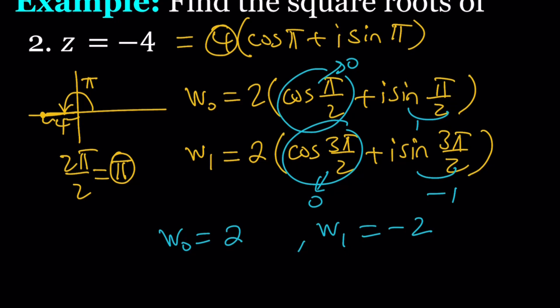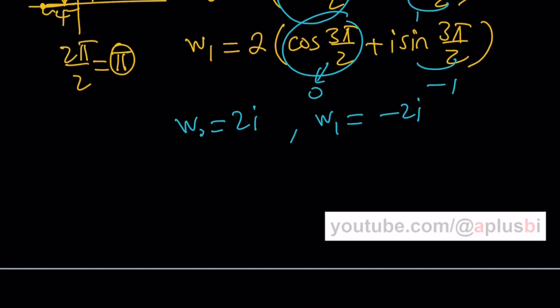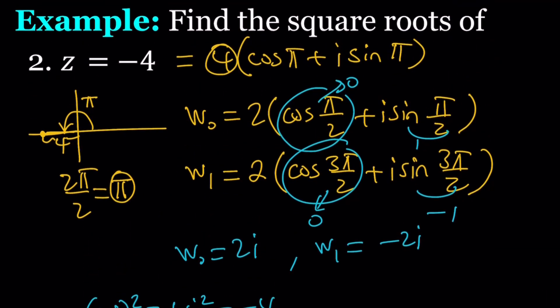So, I'm sorry. Those are not the answers. Sorry about that. We have to multiply them by i. So how do you multiply by i? 2 times 1 times i. So w0 is going to be 2i, and w1 is just going to be negative 2i. And of course, when you square negative 2i, you're not going to get negative 4. But if you square 2i, you're going to get 4i squared, which is negative 4. And that kind of verifies what we found. So those are the square roots.